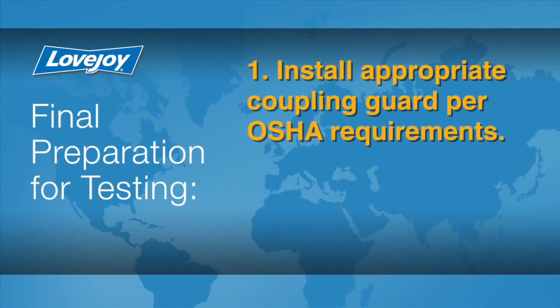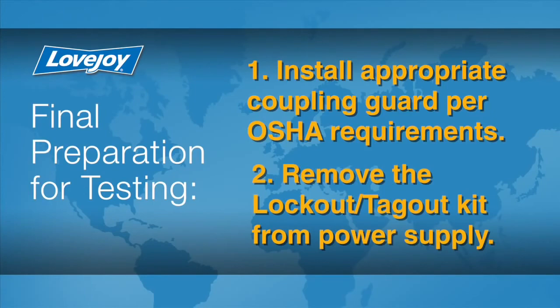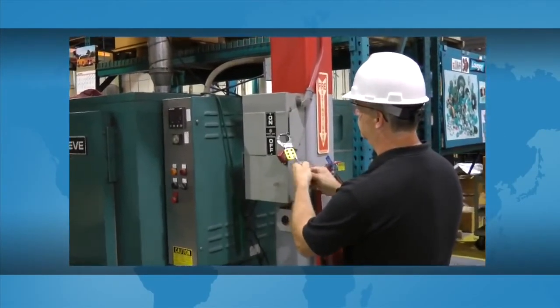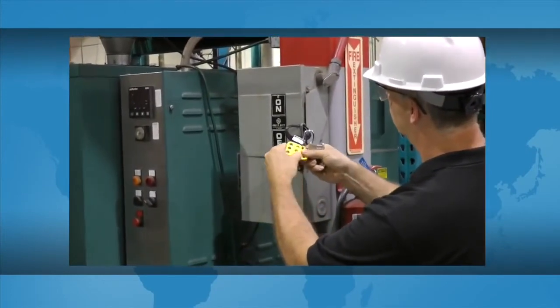Install the appropriate coupling guard per OSHA requirements and remove the lockout tagout kit from the power supply. The equipment can then be started up and tested.